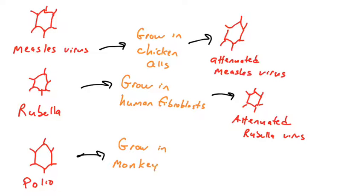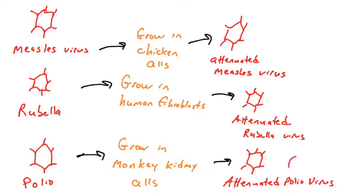Our final example is polio. There are different polio vaccines — the Salk and the Sabin vaccines — and here we're talking about the Sabin vaccine, also known as the oral live vaccine. The virus was grown in monkey kidney cells, not its natural host, and passaged there repeatedly. Mutants were selected for their ability to grow poorly in human cells. After repeated passaging, the poliovirus attained enough mutations to grow well in monkey kidney cells but poorly in human cells and not cause disease. When given as the oral live vaccine, the virus infects your cells and replicates, but typically does not cause disease.